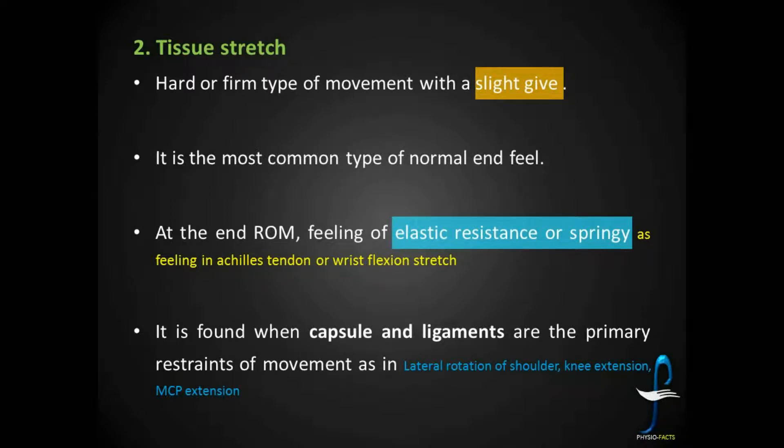It is the most common type of end feel in our body. Maximum end feels are of this type, tissue stretch, where firm feel will be achieved at the end range with a feeling of elastic resistance or springy feeling in Achilles tendon or wrist flexion stretch. It is found when capsule and ligaments are the primary restraint of movement, as in lateral rotation of the shoulder, knee extension, and metacarpophalangeal extension.